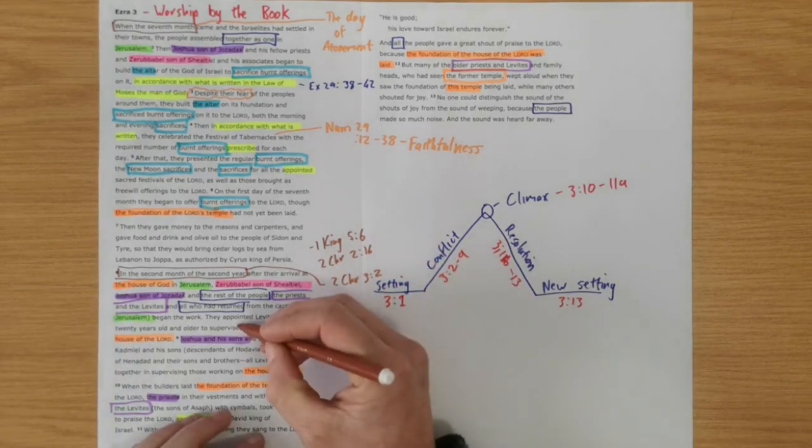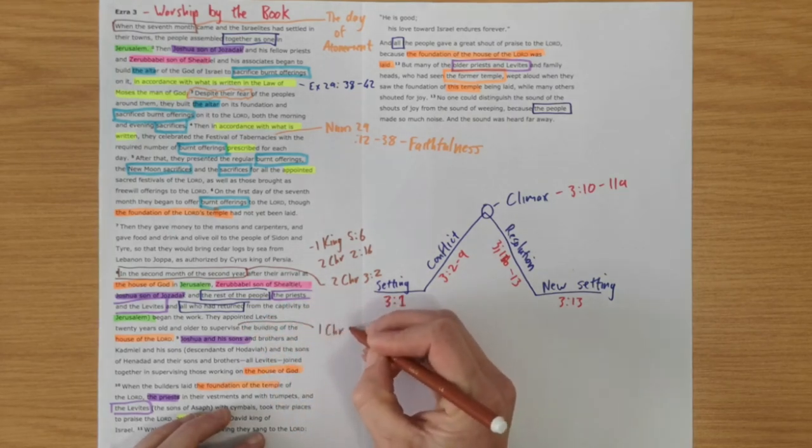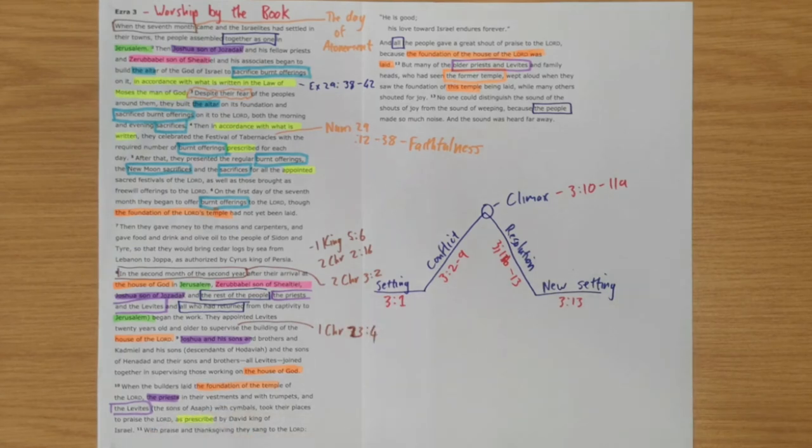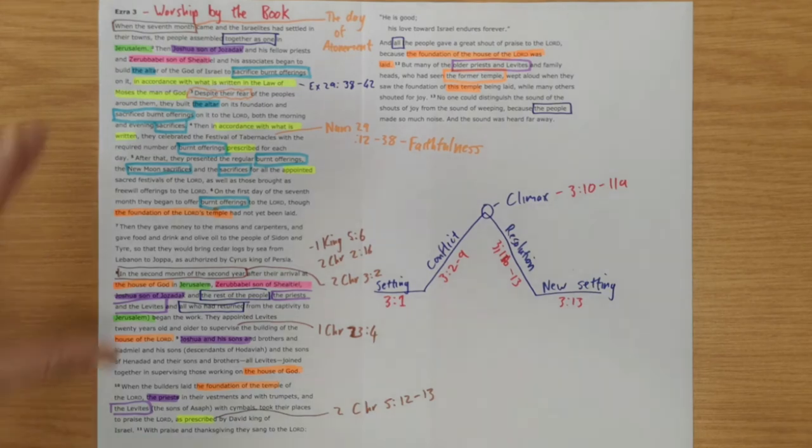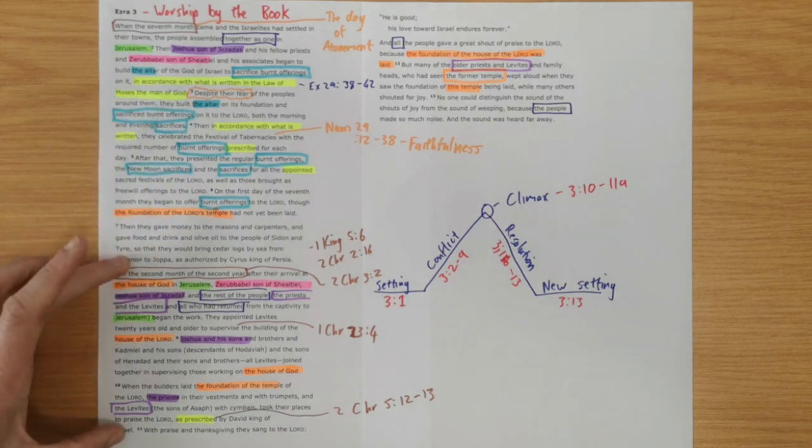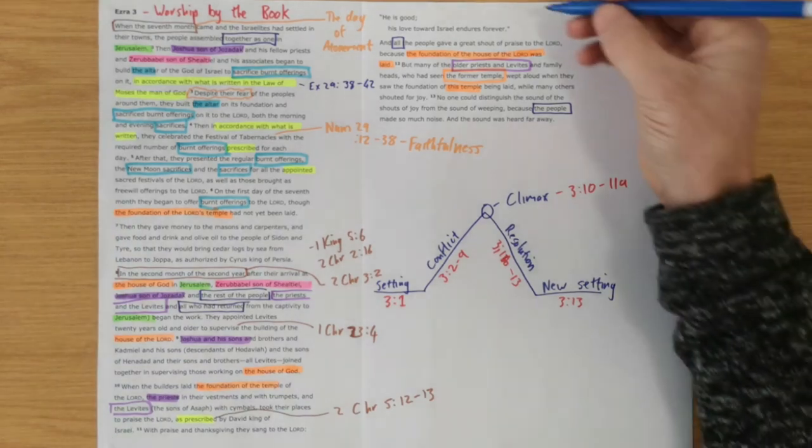We've also got the Levite supervisor which is again trying to do it by the book. That's how they had done it, 1 Chronicles 23 verse 4, as prescribed again. They're doing it by the book, so they're wanting to do things rightly. They're wanting to worship God as Moses had told them to do it. They're wanting to rebuild the temple much like great king Solomon had built the temple. And then they're wanting to worship...